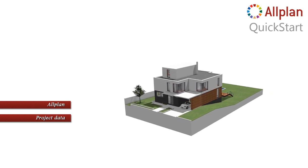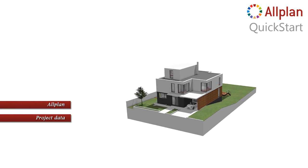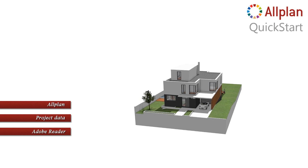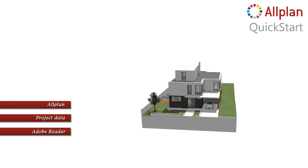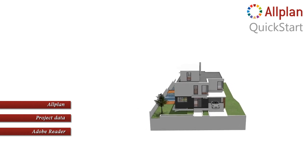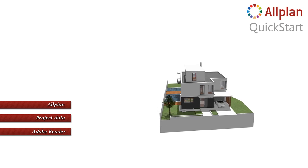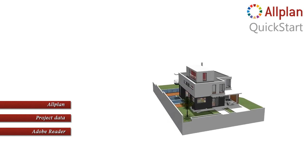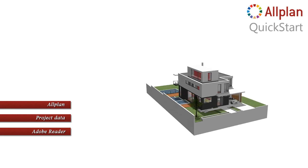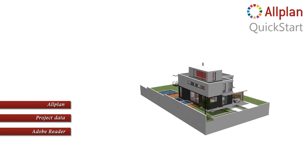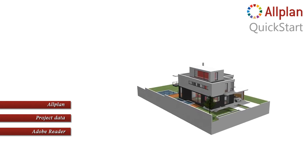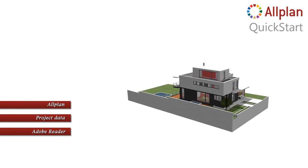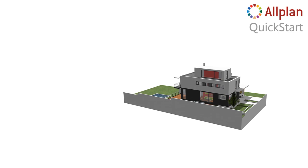In the Quick Start units, I will also show you how to export PDF files, so please make sure that you have installed Adobe Reader on your computer. If you don't have Adobe Reader yet, you can download it from the internet at adobe.com. When you have installed AllPlan, the Quick Start project and Adobe Reader, you're all set. Start your AllPlan and we're ready to begin with Unit 1.